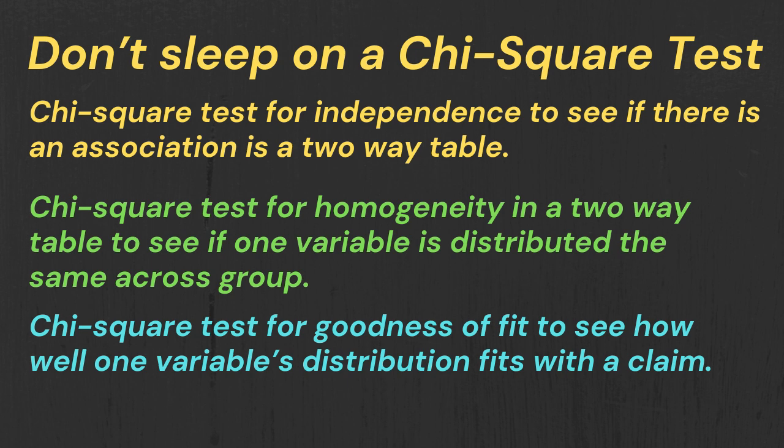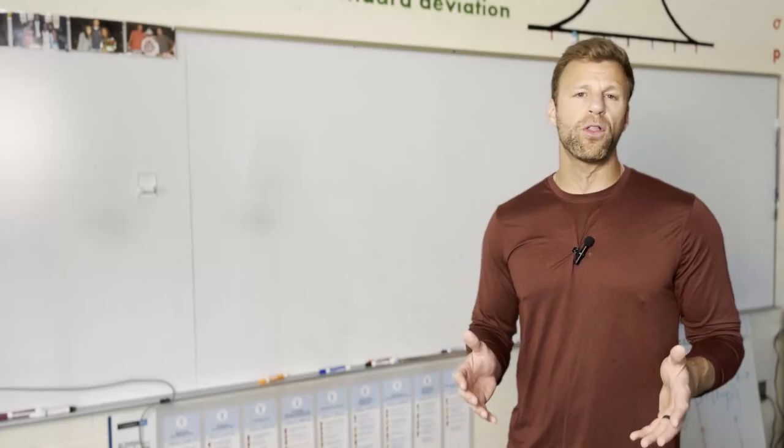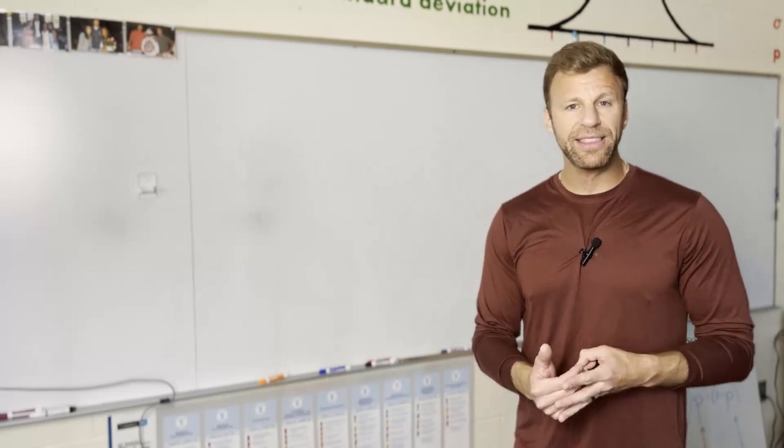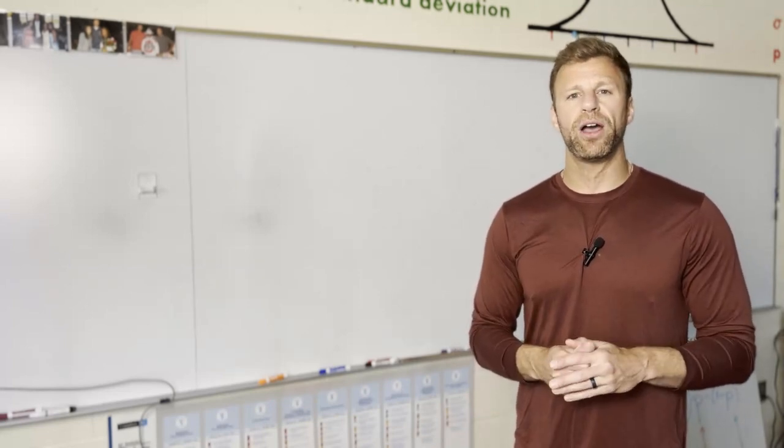Or the other thing it could be is a chi-square test for goodness of fit. Just make sure you're prepared for that. But even if it's one of those tests, it's still going to follow four rules: name the procedure, check the conditions, get that p-value, and then make a conclusion based on that p-value.